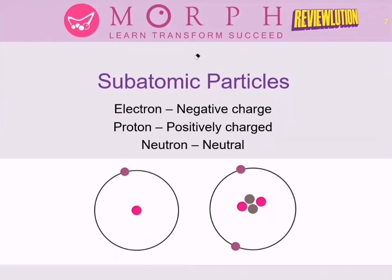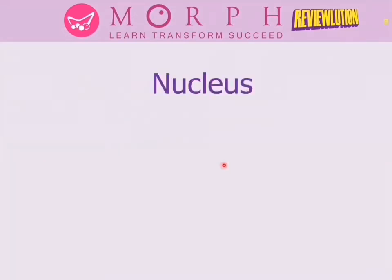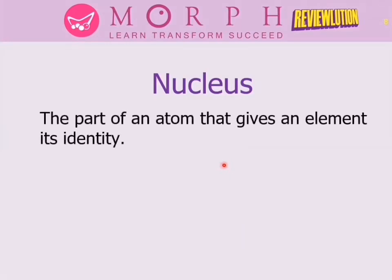The central part of the atom is called the nucleus. The nucleus gives us the identity of an atom — just like how each person has fingerprints unique to them, each element has a unique identity. The identity of an element can be found inside the atom, in the nucleus. The nucleus is composed of only two things: protons and neutrons.